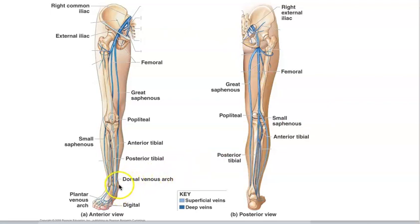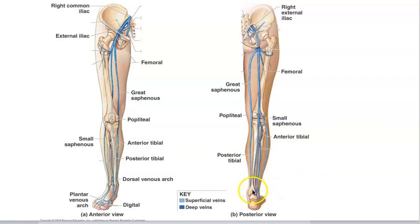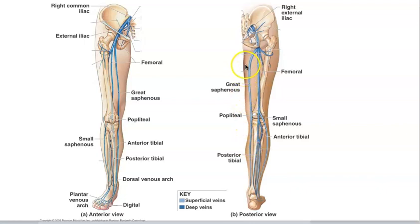The great saphenous vein begins at the dorsal venous arch on top of the foot. It runs along the medial side of the leg all the way up, draining into the femoral vein. The posterior view shows the posterior tibial vein joining the anterior tibial vein to form the popliteal vein, which becomes the femoral vein, with the great saphenous vein visible along the medial aspect.